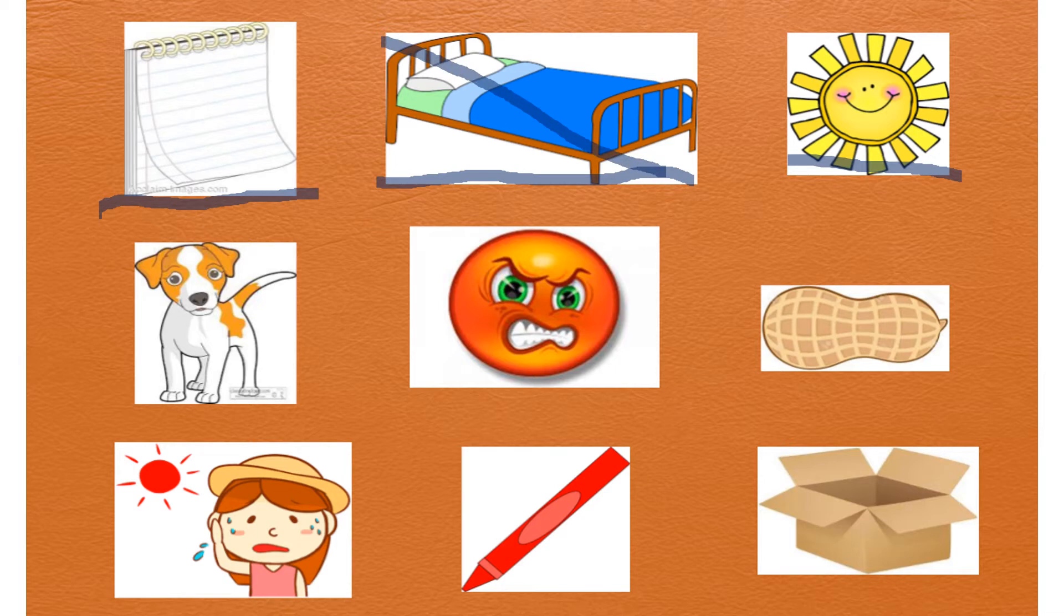All right, now we have our pad and our sun left. Listen carefully: /s/ /u/ /n/. Pad? Sun? I hear sun. There we go.